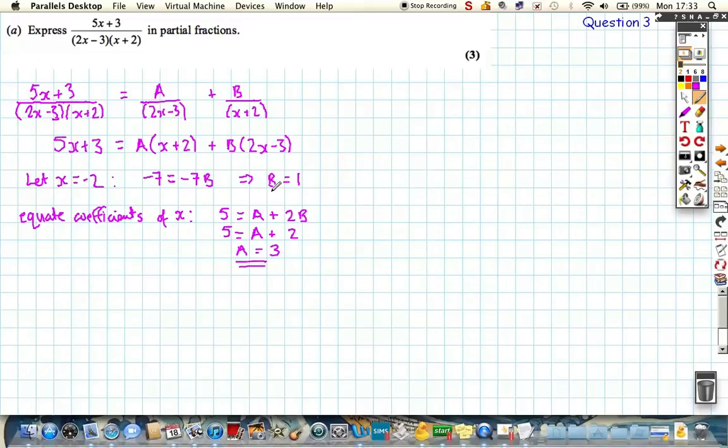So that's our first answer. That's our second answer. So expressing the original expression, we can actually write the original expression as this. We can write it as 3 over 2x minus 3 plus 1 over x plus 2, as required.